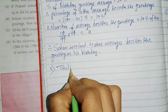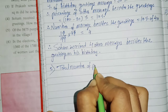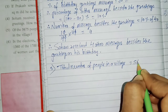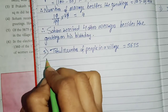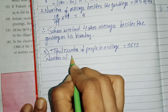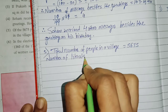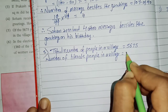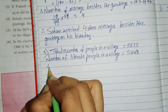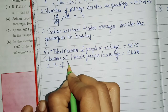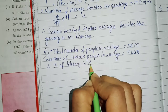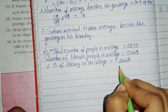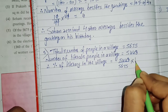Total number of people in a village equals 5,675 as per the question. Number of literate people in a village equals 5,448. Therefore, percentage of literacy in the village equals 5,448 upon 5,675 multiplied by 100.